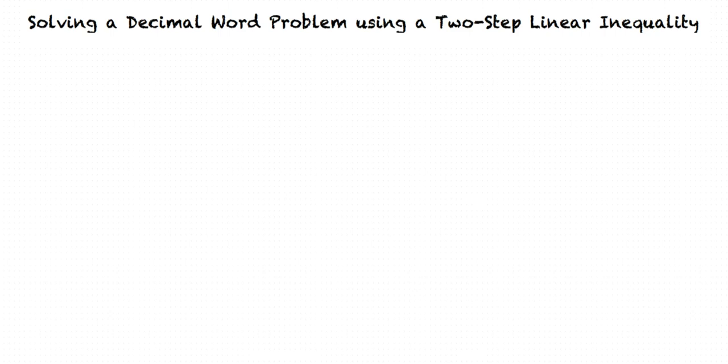This video will cover the topic of solving a decimal word problem using a two-step linear inequality. The first step in these problems is to set up an inequality based on information given to us. After we do that, we can solve the inequality for our variable.